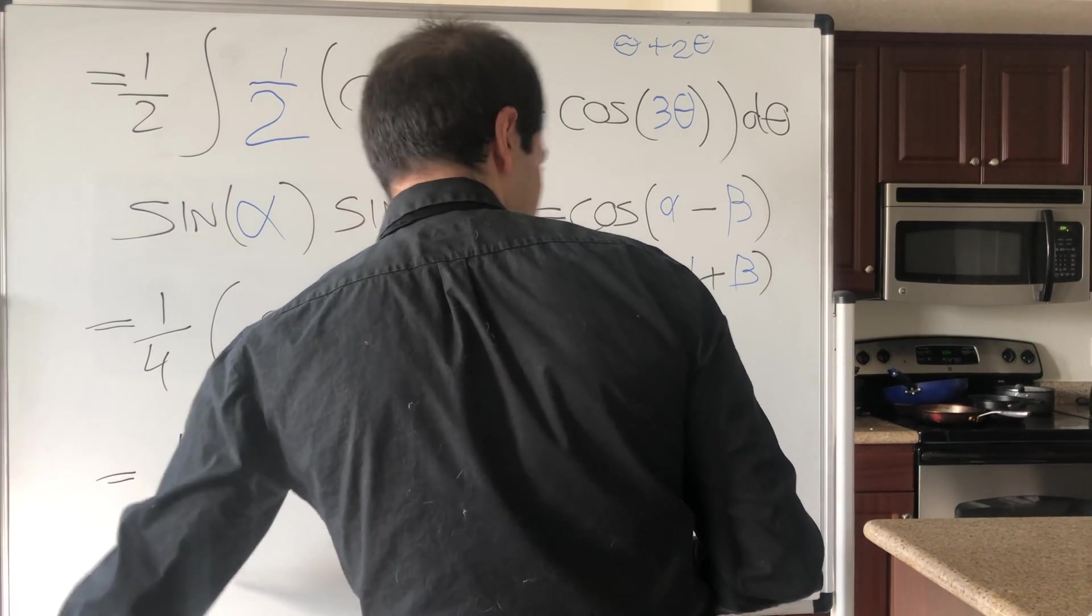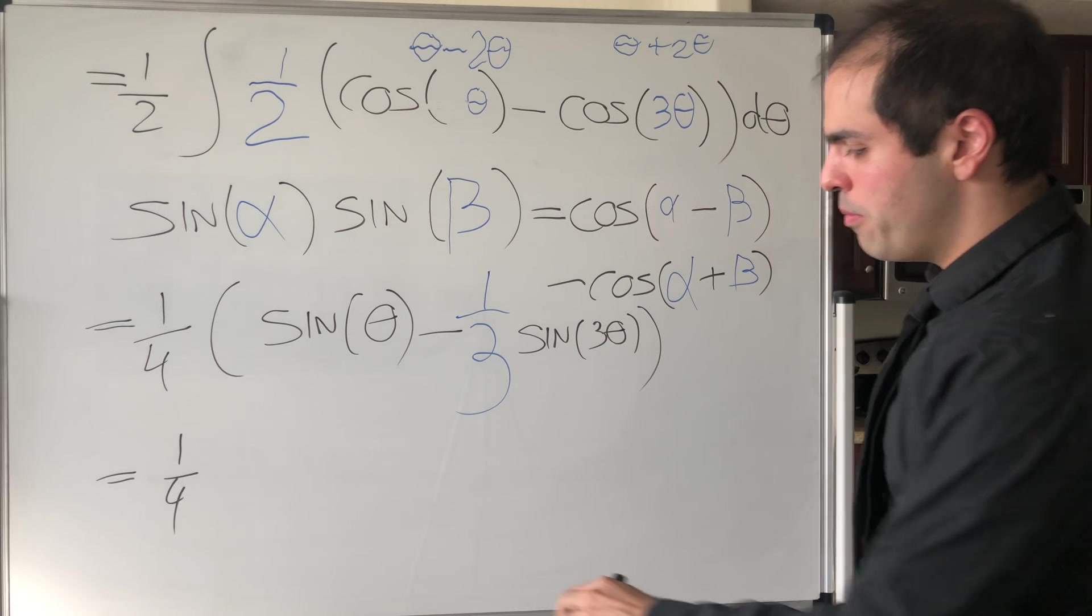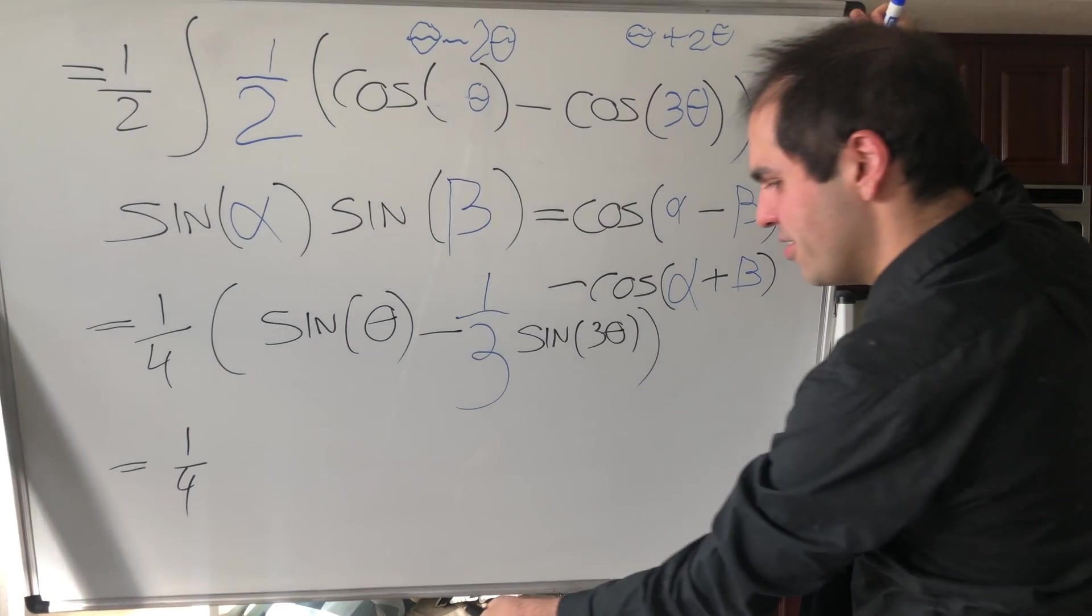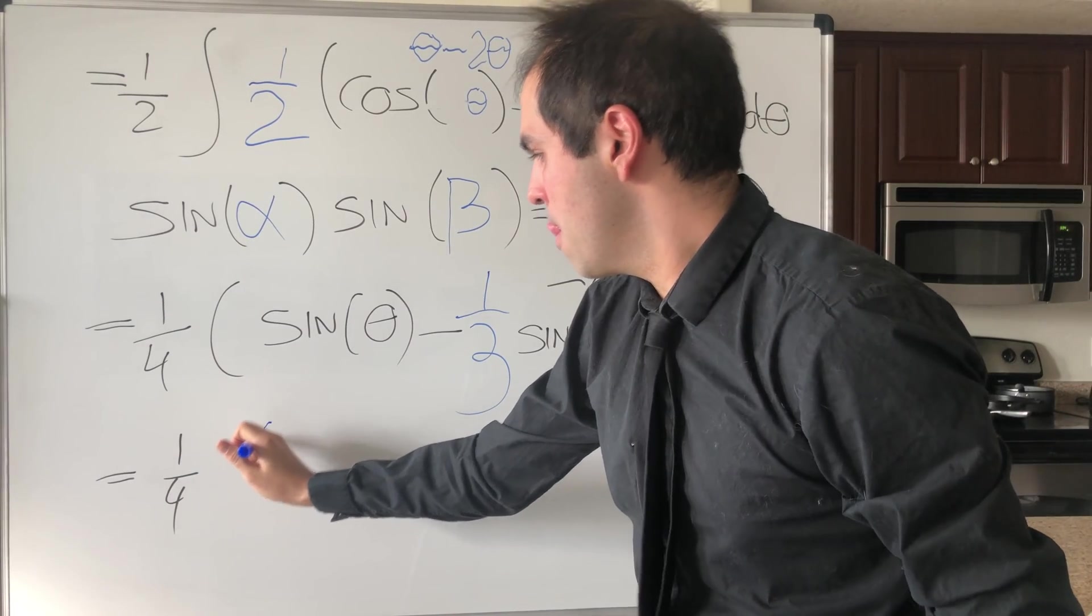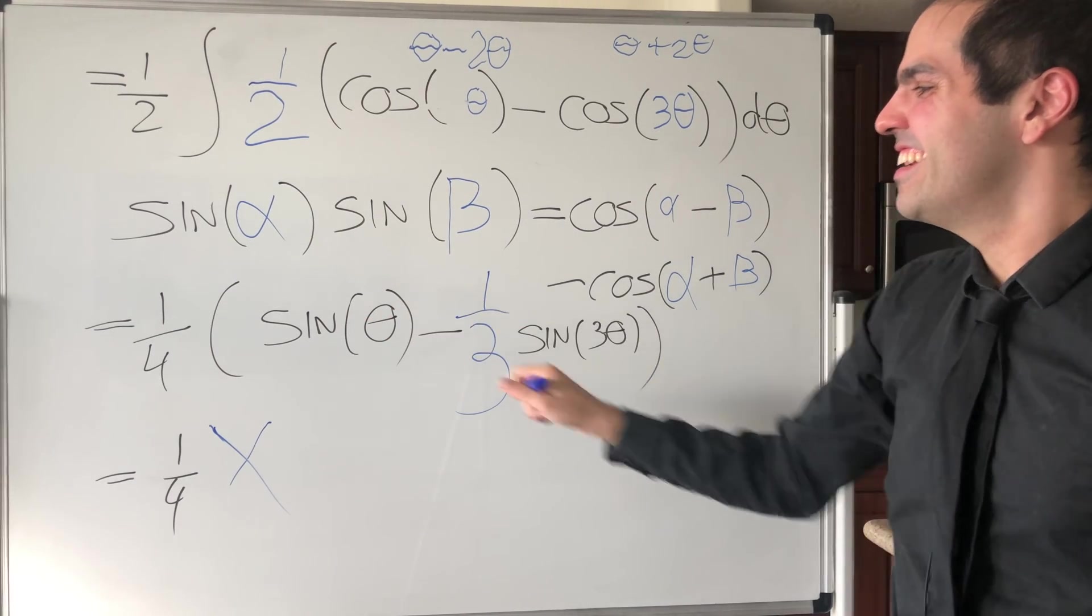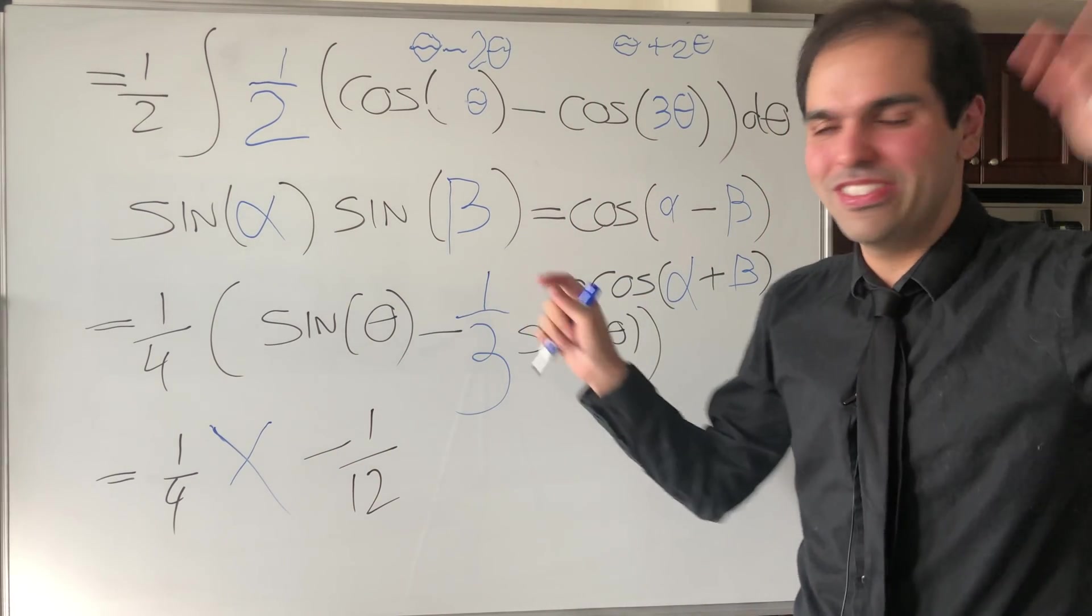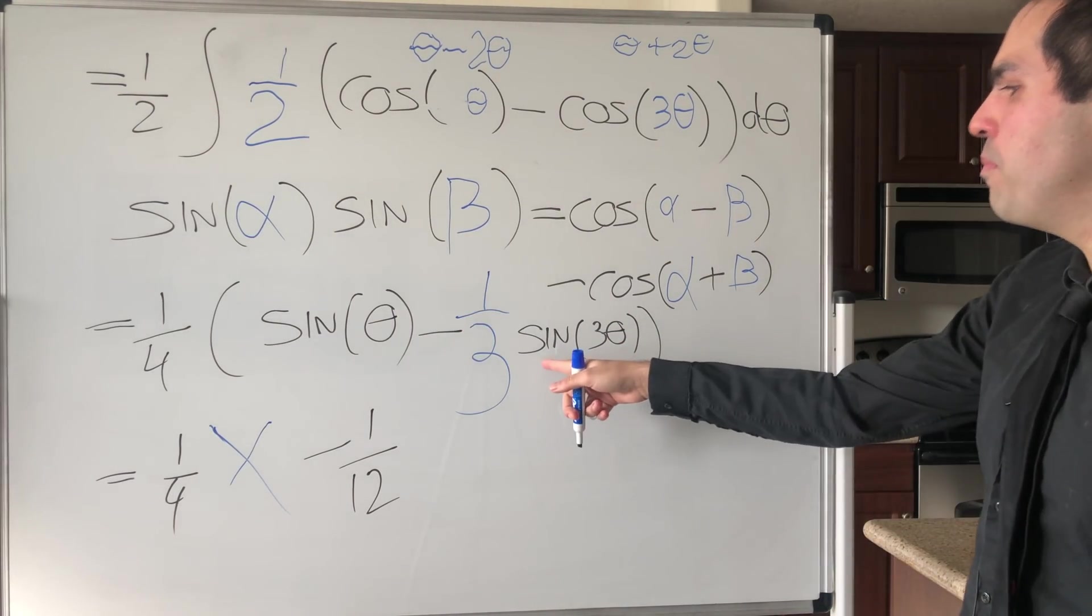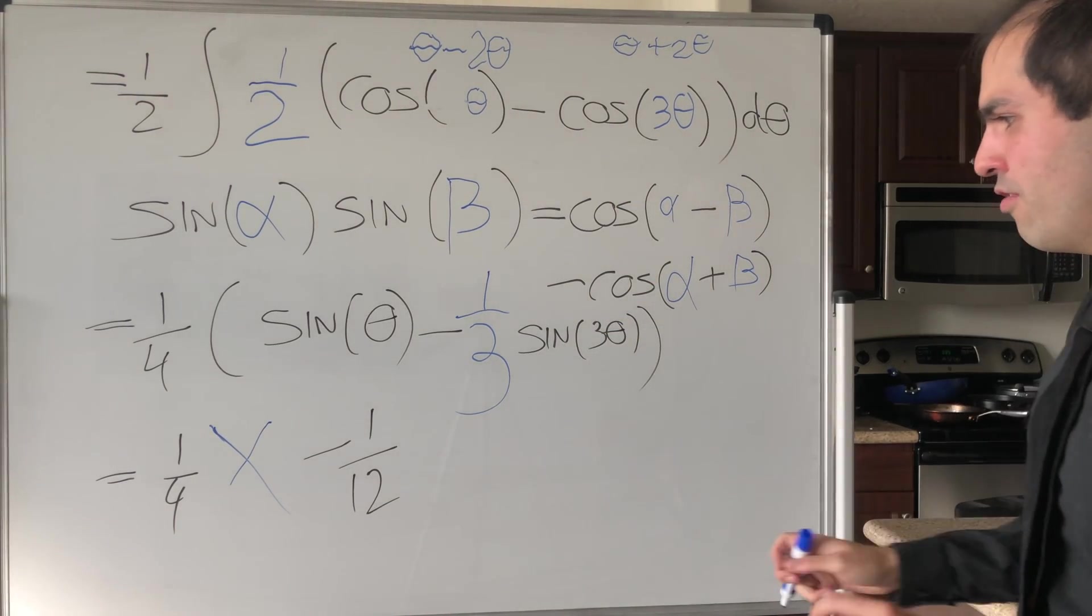So let's see, I'm not sure if we substitute this here. Yeah, so you get one quarter sine of theta, but remember, sine of theta, that's just x. So this is one quarter x, and then minus one twelfth. So minus one twelfth. Again, insert sum of integers, strokes, blah, blah, blah, and you get sine of three theta, but now I would like to remind you there is this nice formula for sine of three theta.